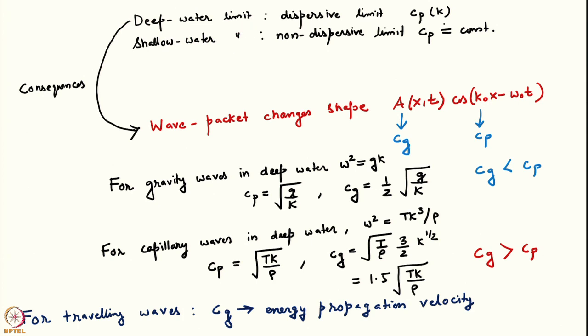We have seen the consequences of the fact that the deep water limit is dispersive — every wave travels at its own phase speed. As a consequence, when we excite at time t=0 a whole spectrum of wavelengths, the resultant wave packet keeps changing shape as it moves. Using the method of stationary phase, we have seen that at long times, if you move with a constant speed x/t, the wave packet may be described as an envelope A(x,t) times cos(k₀x − ω₀t), where k₀ and ω₀ are local wave number and frequency. The envelope A(x,t) moves with the local group velocity, while the cosine term moves with the phase speed.